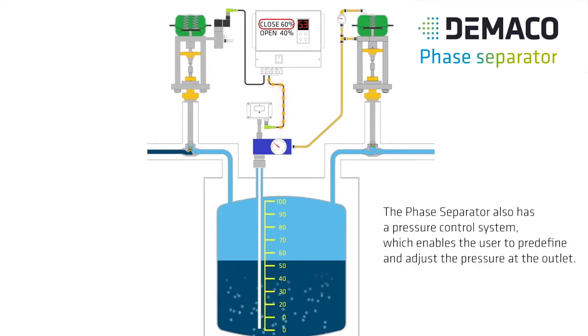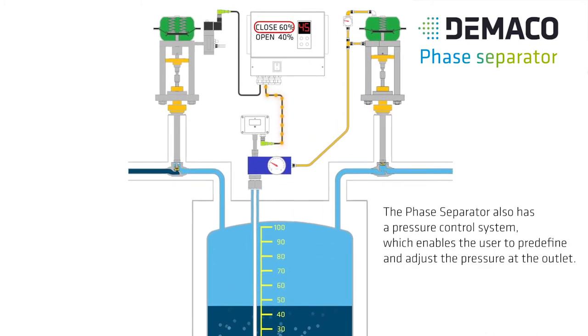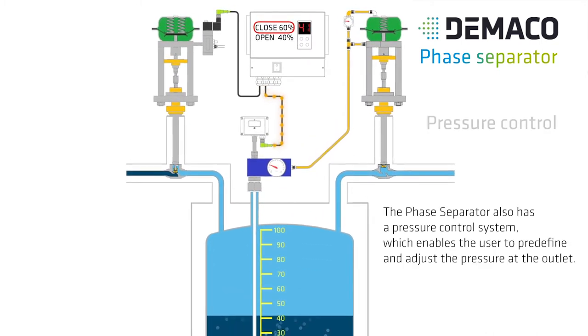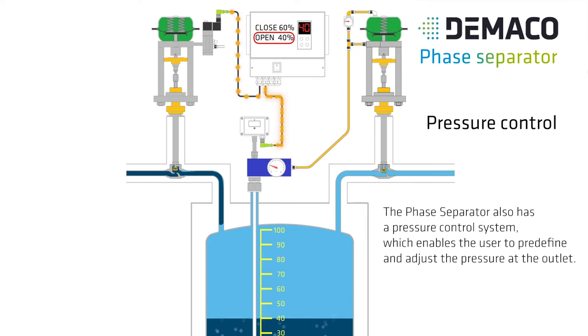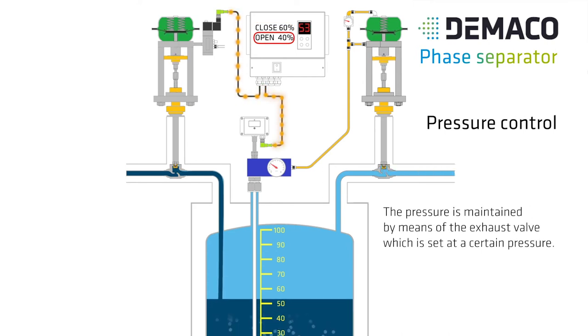The Phase Separator also has a pressure control system which enables the user to pre-define and adjust the pressure at the outlet. The pressure is maintained by means of the exhaust valve which is set at a certain pressure.